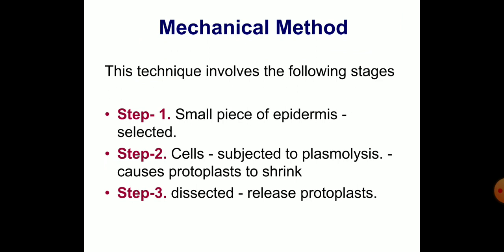The mechanical method is suitable for isolation of protoplasts from vacuolated cells, such as onion bulbs, scales, and radish roots. However, this method is not suitable for isolating protoplasts from meristematic and less vacuolated cells. It gives poor yield of protoplasts and is now rarely used for protoplast isolation.